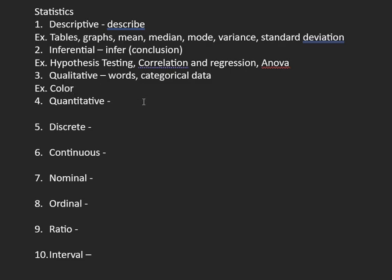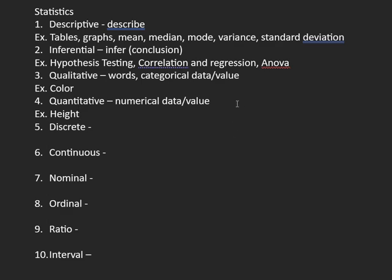For quantitative data, that would be numerical — numerical data or value. For example, if somebody asks 'What is your height?' you say 5'6". Since 5'6" is numerical data, it falls under quantitative data. For qualitative data, that would be words or categorical value — categories can be color, gender, or religious affiliations. For quantitative data, that would be numerical or numbers.